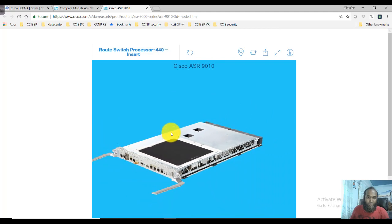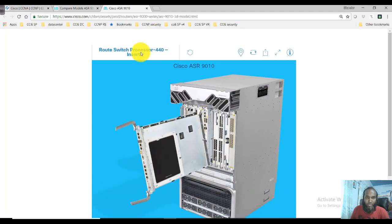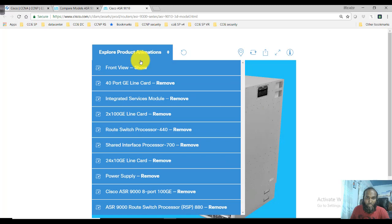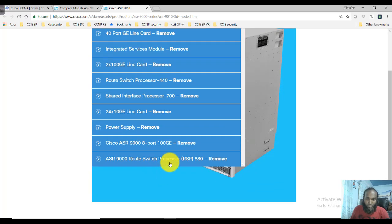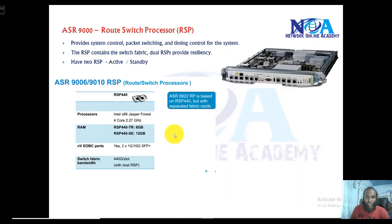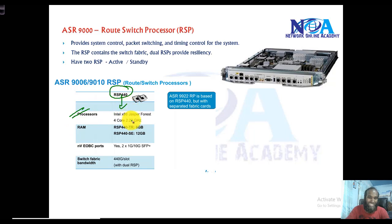Clicking insert to add it, we see the list here showing the route switch processor card. The specifications will vary depending upon the model you select. You can always visit the Cisco website to see the exact features. For example, the RSP 441 supports an Intel XC processor with four cores, RAM capabilities, different port types, and bandwidth support for the switch fabric.